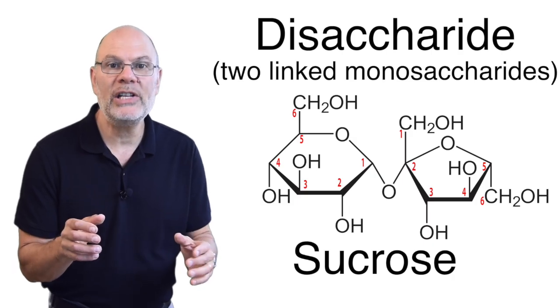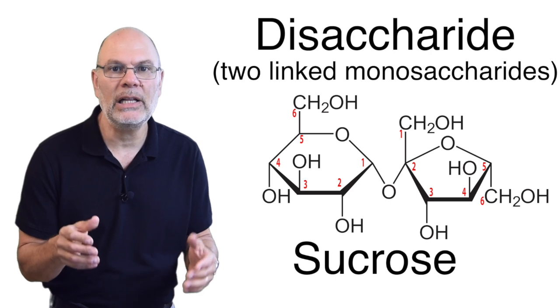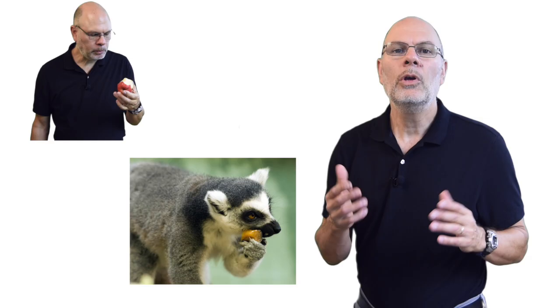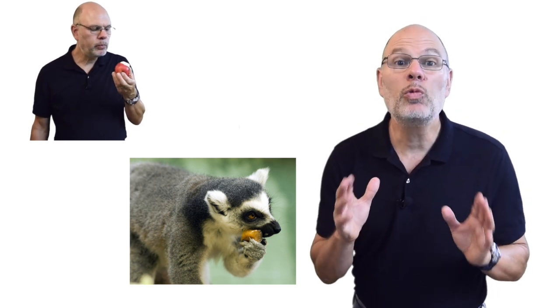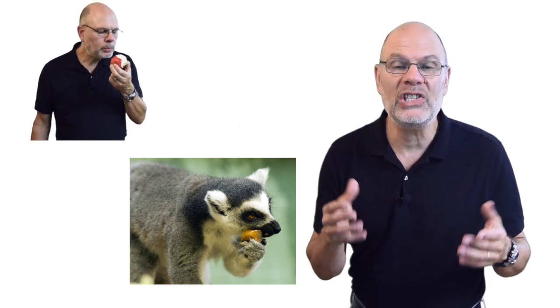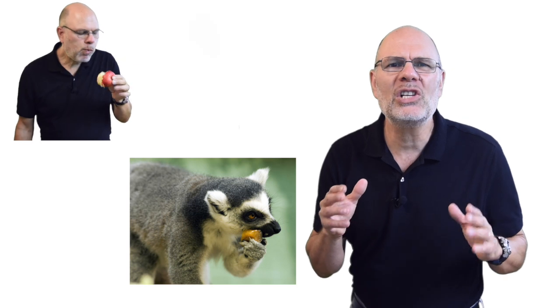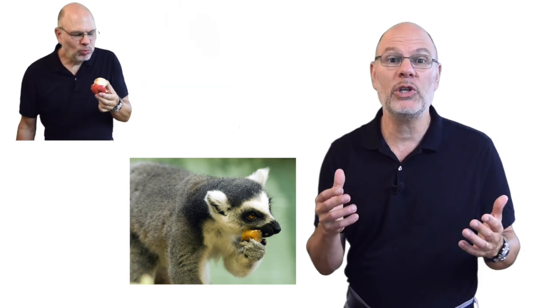Put two monosaccharides together, you have a disaccharide, like sucrose, also known as table sugar. You like sugar? Me too. That's because we're primates, a group of animals that evolved in trees eating fruits. Primates like us love sugars because they're a quick source of energy, and so do lots of other animals.